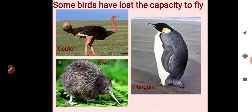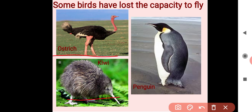Some birds have lost the capacity to fly because they are heavy-weighted. For example, the ostrich, kiwi, and penguin — these are birds but they cannot fly.